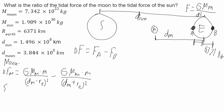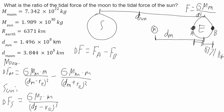For the sun, delta F of S will be equal to G times the mass of the sun times the mass of the water over the distance of the sun minus the radius of the Earth, squared, minus G times the mass of the sun times the mass of the water over the distance from the sun to the Earth plus the radius of the Earth, squared.